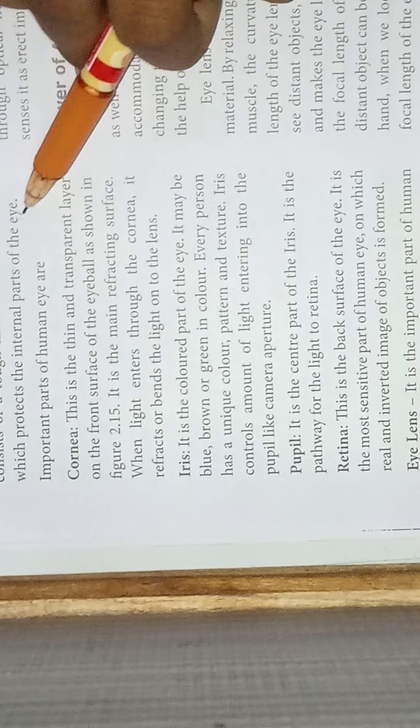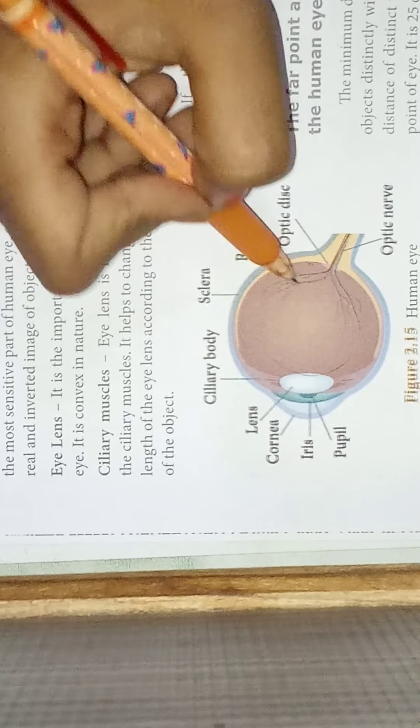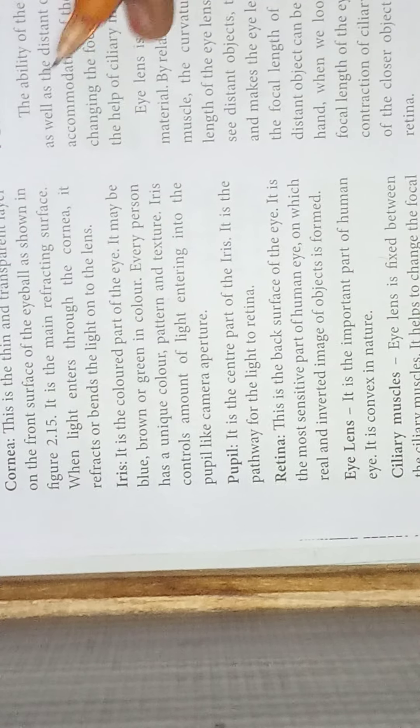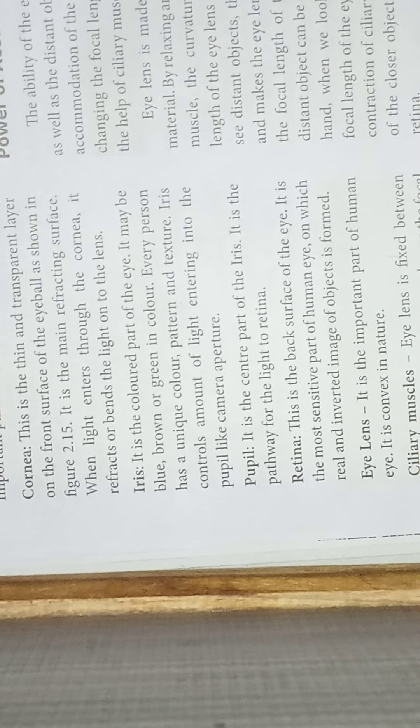The sclera is the first membrane which protects the internal parts of the eye. Now let's look at the important parts of the human eye: cornea, iris, pupil, retina, and eye lens.